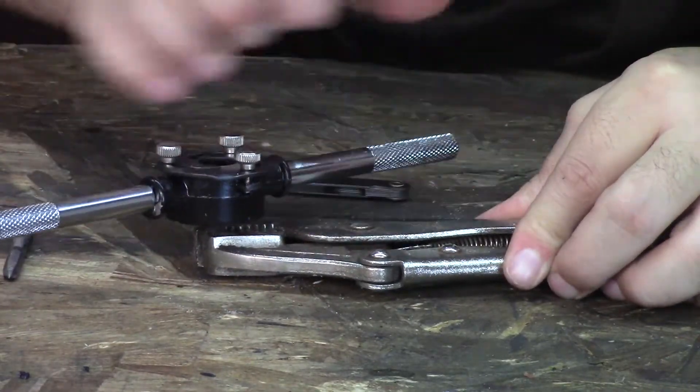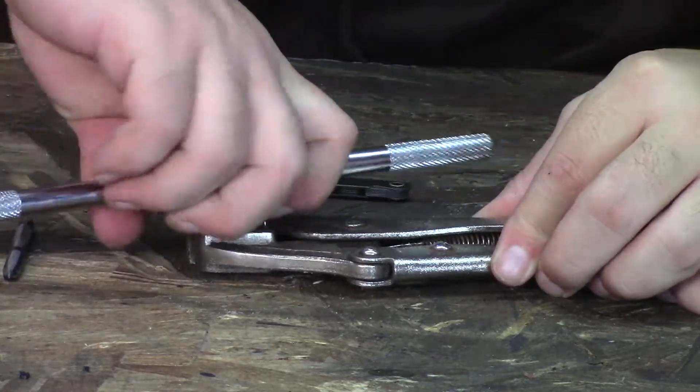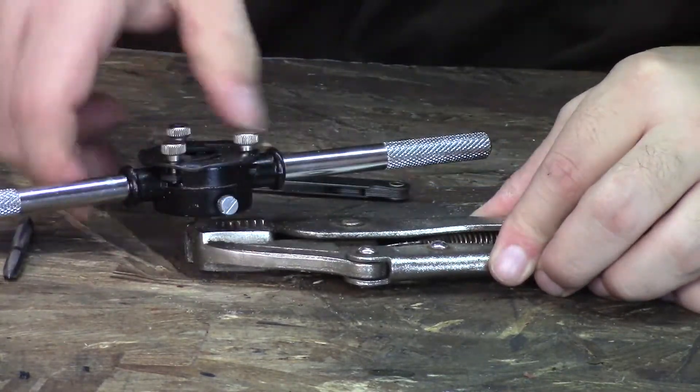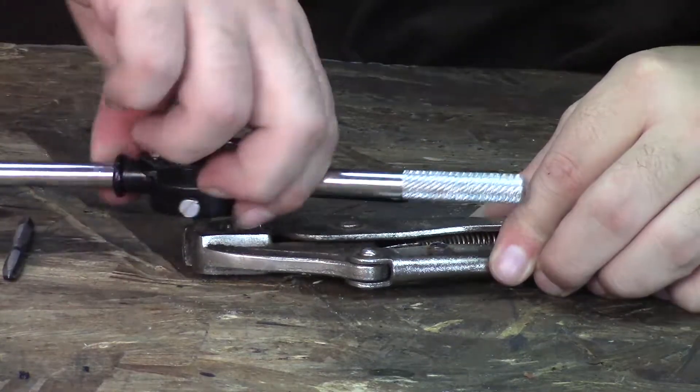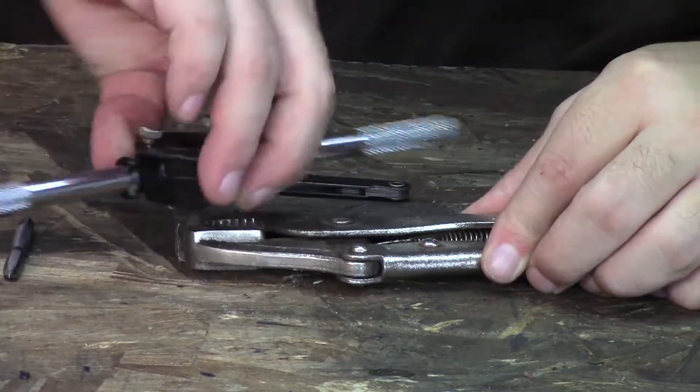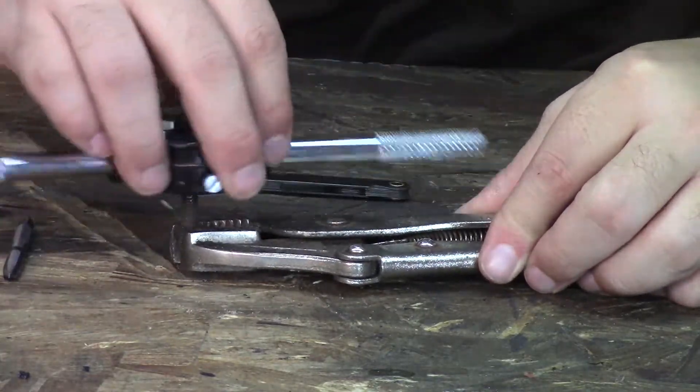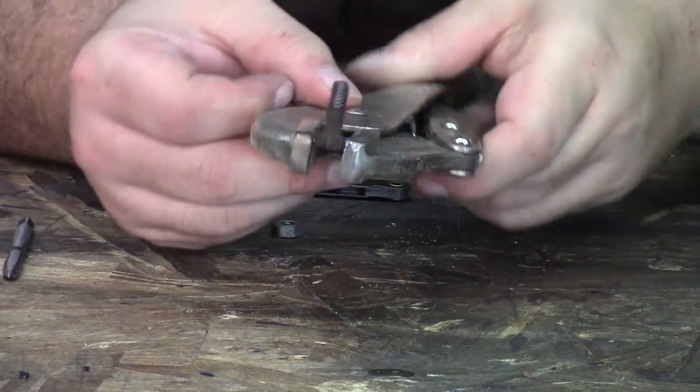So you might want to put a little bit of oil - 3-in-1 oil or something like that - basically any kind of lubricant to remove some of that excess heat. And like that, you got nice clean threads.